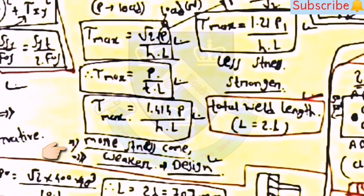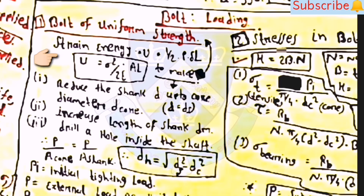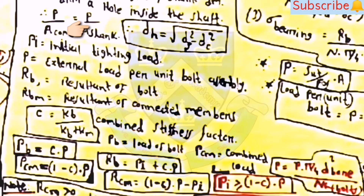For bolt loading: bolt of uniform strength — strain energy U = (sigma²/2E)·L, then d_h = √(d_s² − d_c²). Stiffness constant C = K_b/(K_b + K_m), P_b = C·P, P_cm = (1−C)·P, R_b = P_i + C·P, and R_cm = (1−C)·P − P_i. Here P_i ≥ (1−C)·P. Bolt cross-section area: A = (π/4)·d² divided by n. Stresses in bolt: h = 2bn, where n = number of threads in contact, b = thickness of thread, h = height of nut.